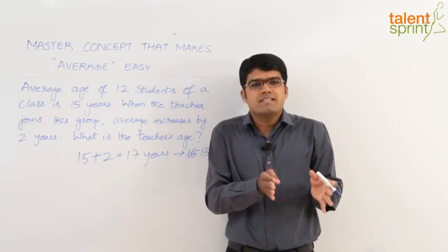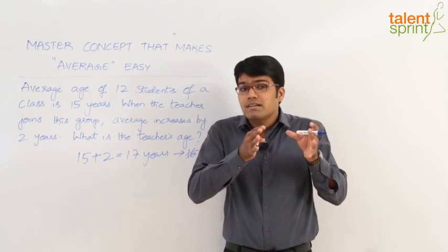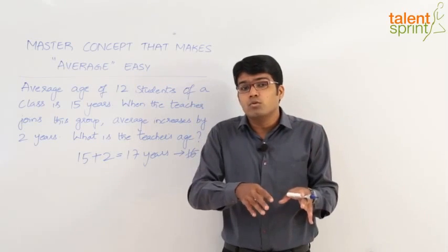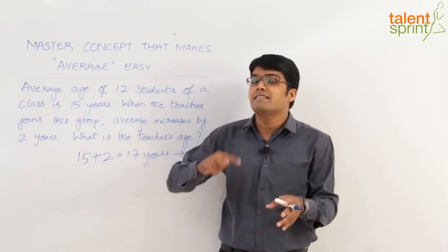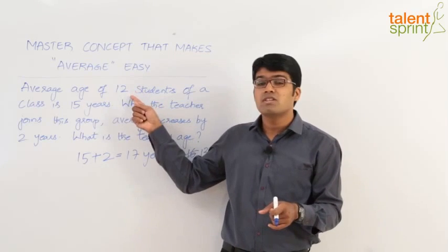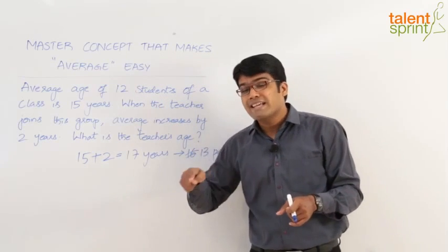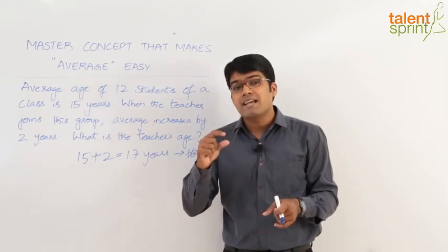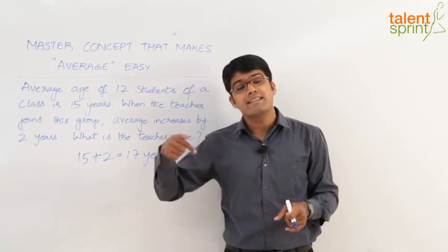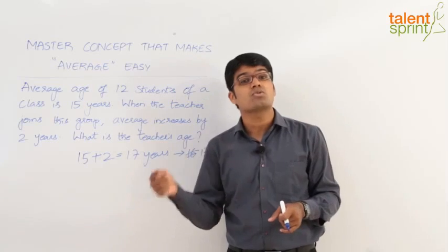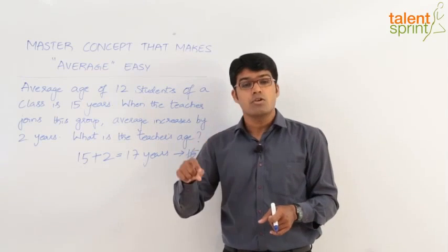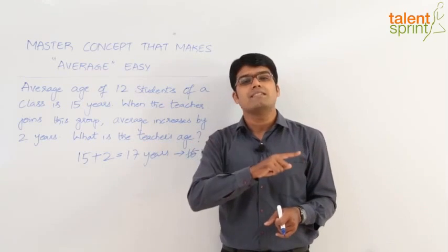Look at it. As per equal distribution, teacher is 17 years old. But because the teacher has joined the group, each person's age here has increased by 2 years. Earlier all the 12 students were 15 years old. But now they are 17 years old. That means there has been an increment of 2 years in each of their ages. Why did this happen? Because of the teacher. This goes to the teacher. 2 years contribution to each of the students is by the teacher.